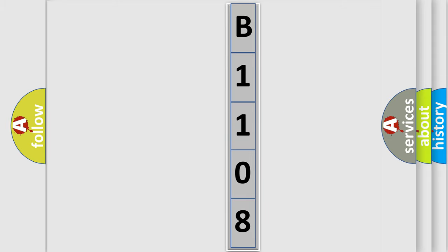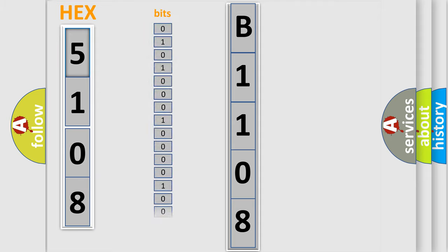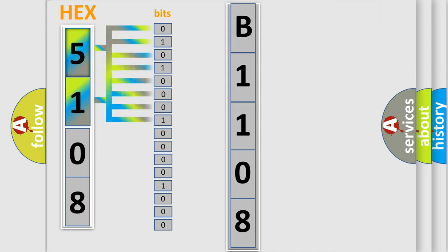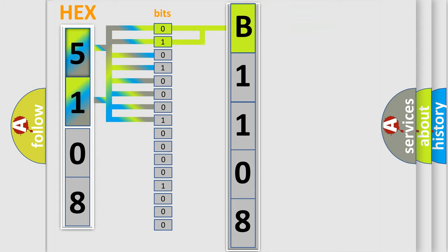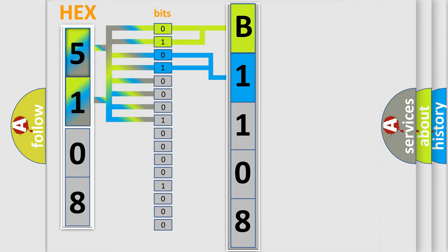The error code is split into two bytes consisting of 16 bits. One bit is the basic unit that each computer works with. The bit has two logical states: zero, low level, and one, high level. By combining the first two bits, the basic character of the error code is expressed. The next two bits determine the second character, and the last four bits of the first byte define the third character of the code.